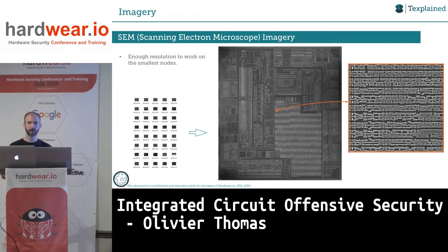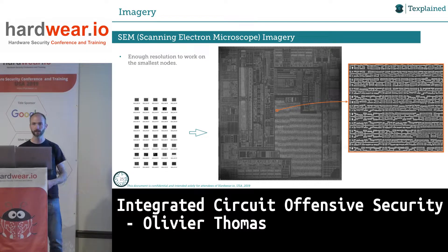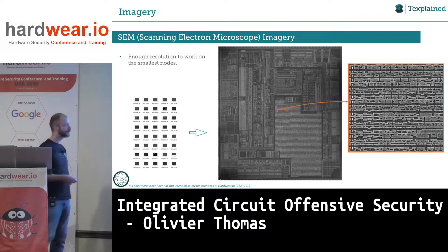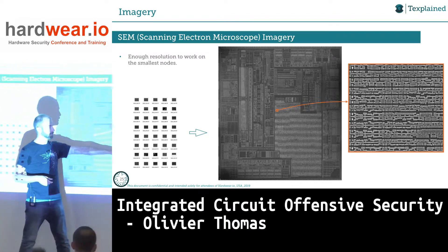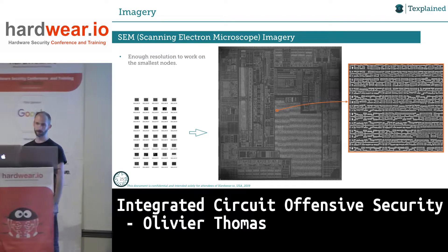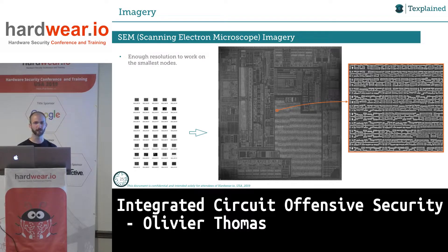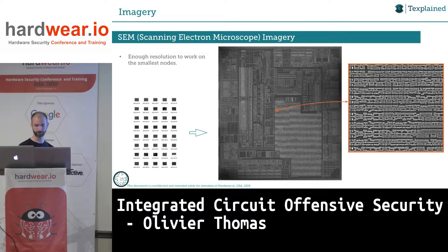Same IC but this time scanned with a SEM. The optical scan was maybe 200 pictures; the SEM scan here is 10,000 pictures. All the interconnections have been removed and what we see is the doped silicon. Resolution-wise with the SEM you can image whatever you want — modern SEMs have a resolution of something like 0.7 nanometers per pixel, which is good even if the tech node you want to look at is 5 nanometers.